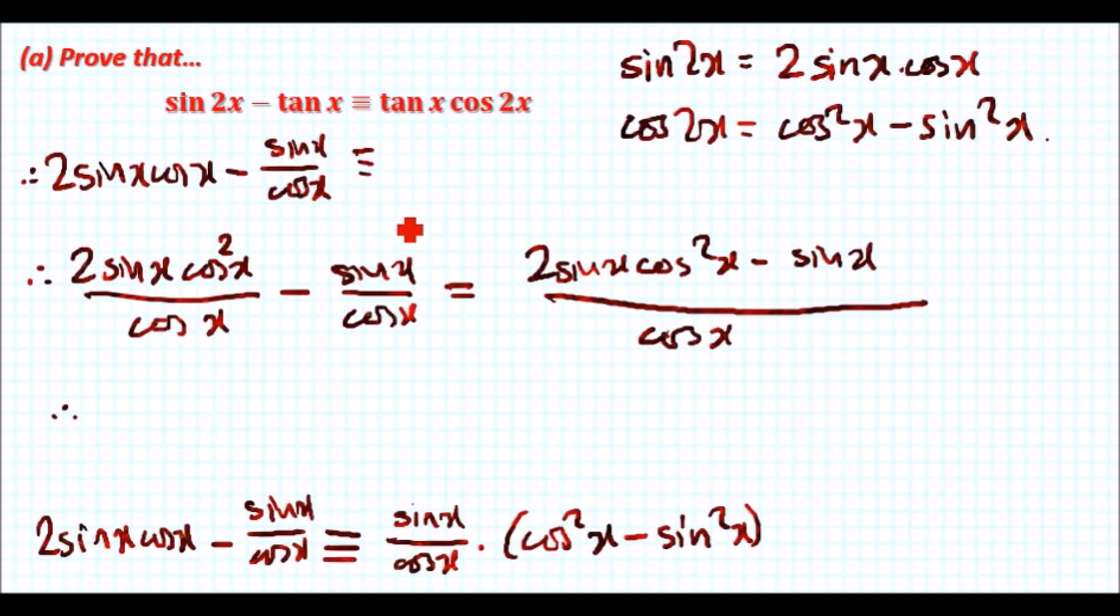Looking over here, let's factorize the sin x for now because sin x seems to be outside a bracket with cos x. So factorizing sin x, we get sin x outside. Inside the bracket we're left with two times cos squared x minus one.